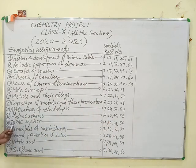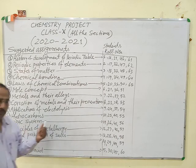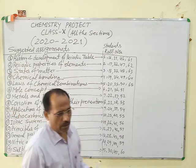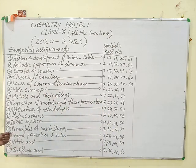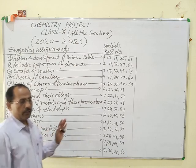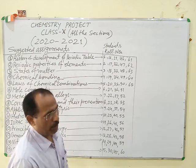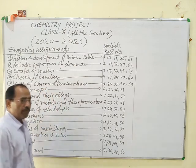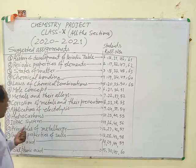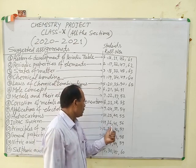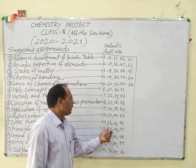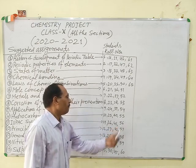Next, the IUPAC system used for the nomenclature of organic and inorganic compounds, describing different rules and techniques used in the nomenclature of organic compounds — mainly alicyclic organic compounds — for roll numbers 11, 26, 41 and 56.